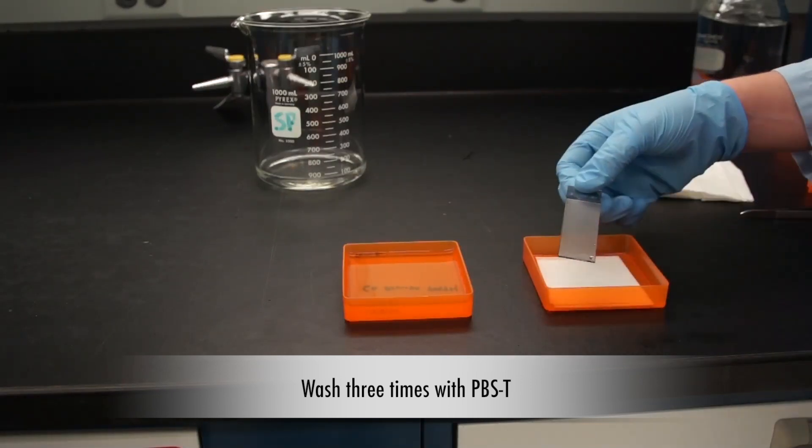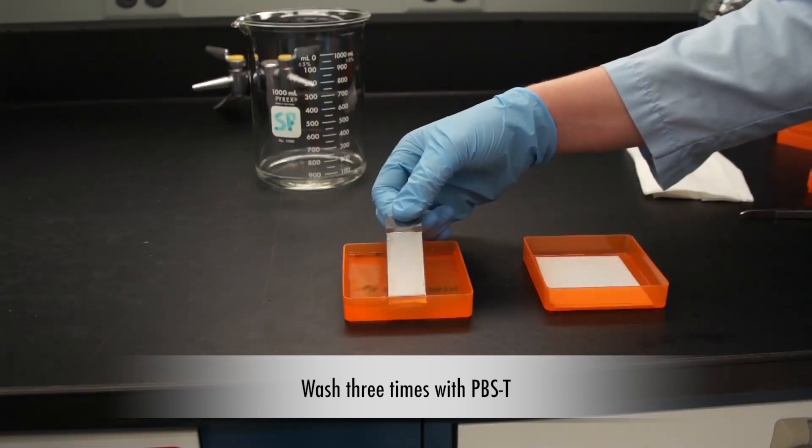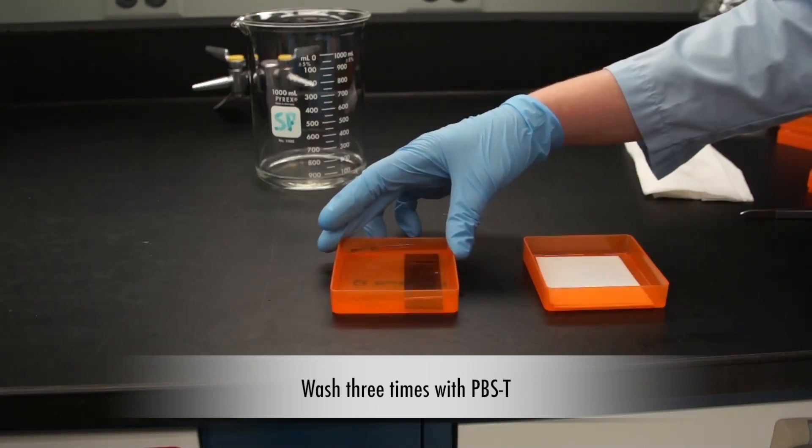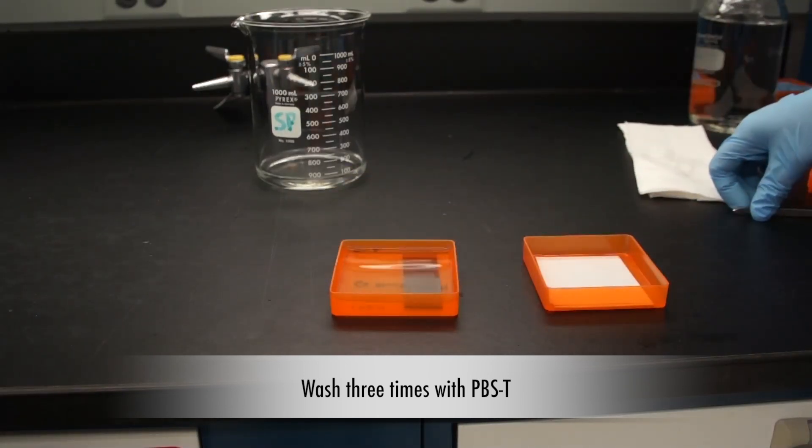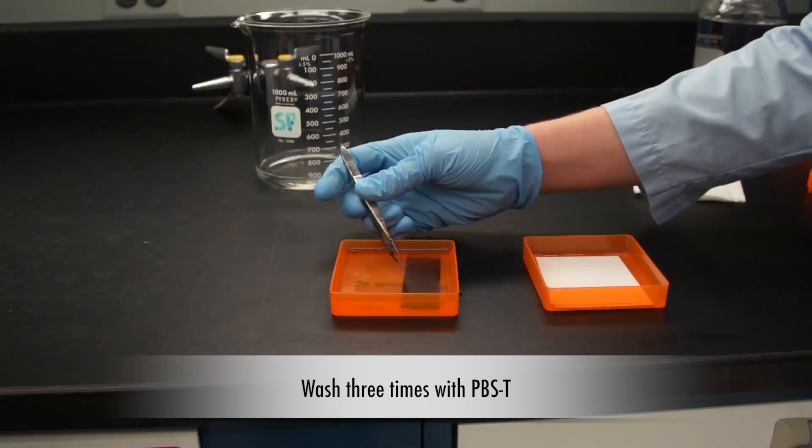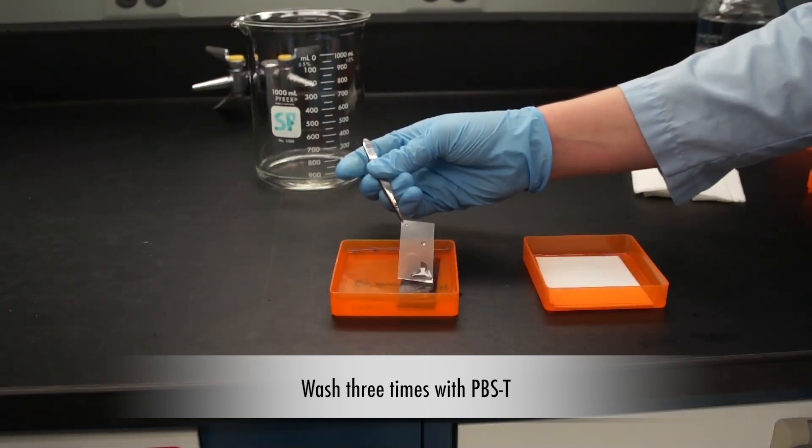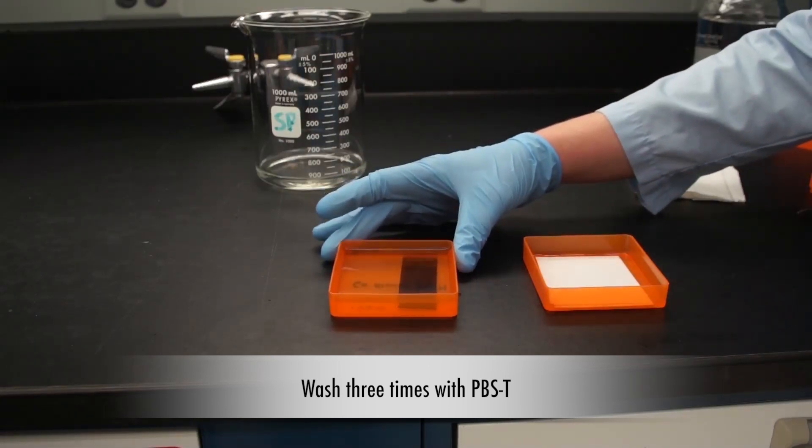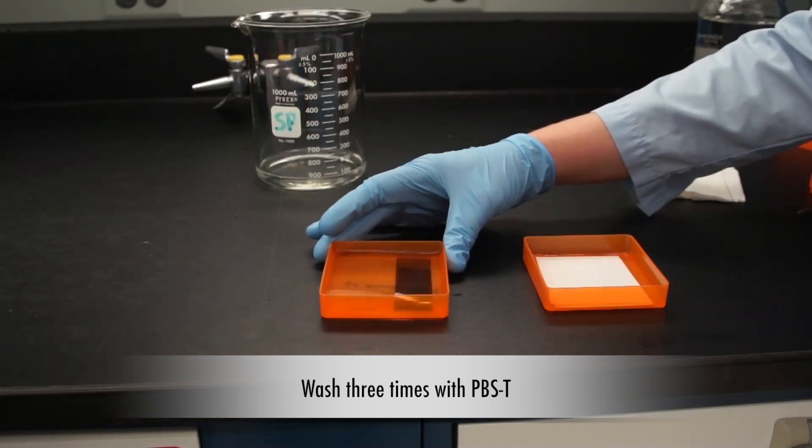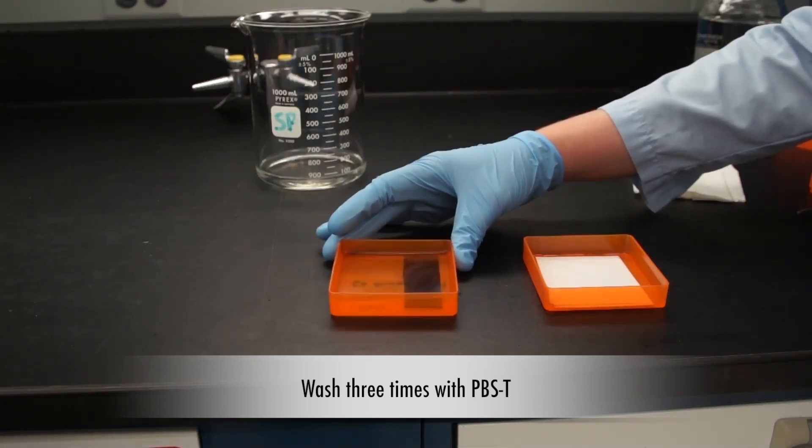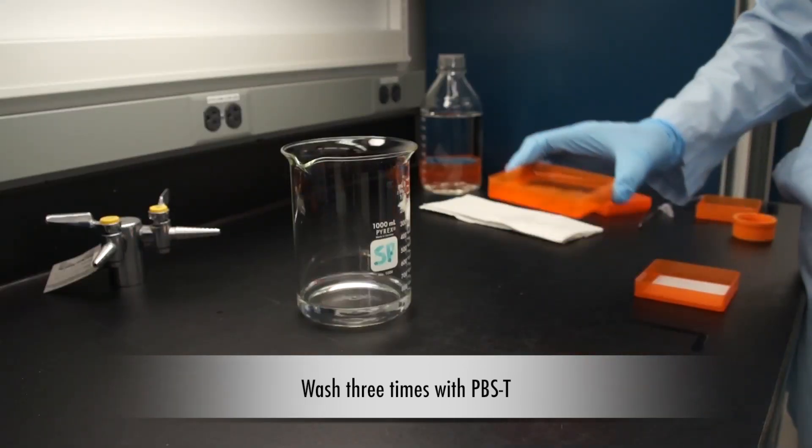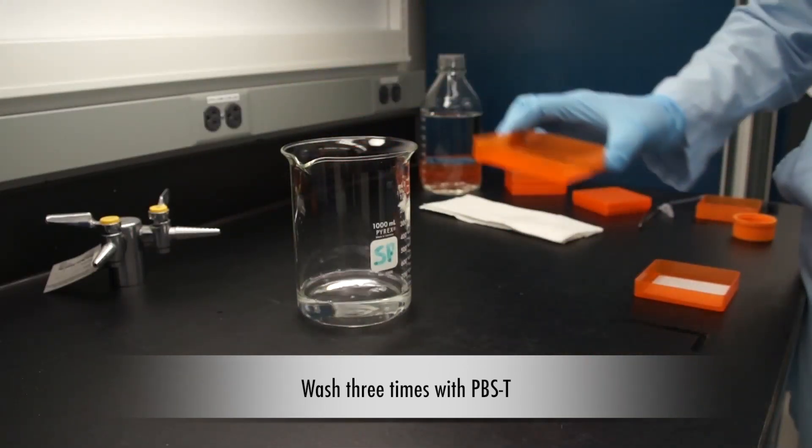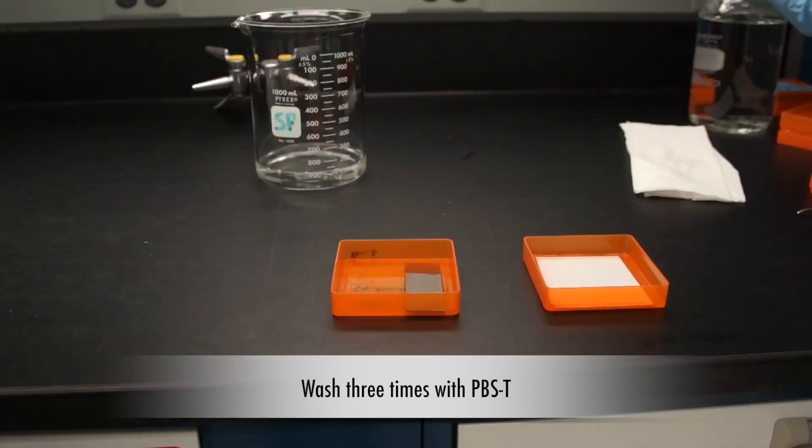Gently drop the slide into PBST buffer. Shake the slide for 5 minutes at 4 degrees Celsius. Drain the buffer from the chamber and wash twice more with PBST.